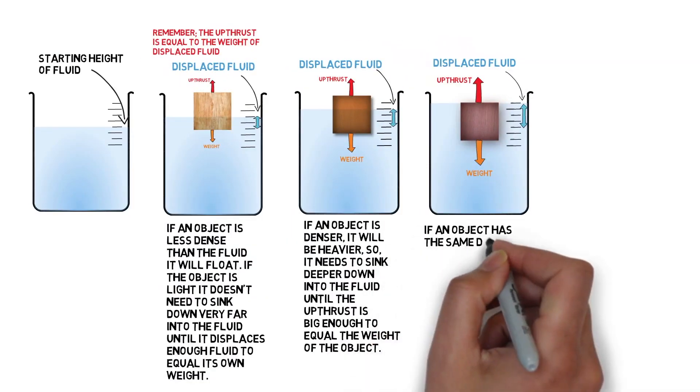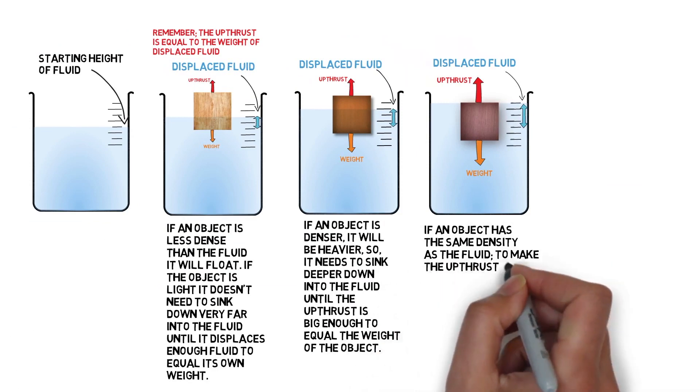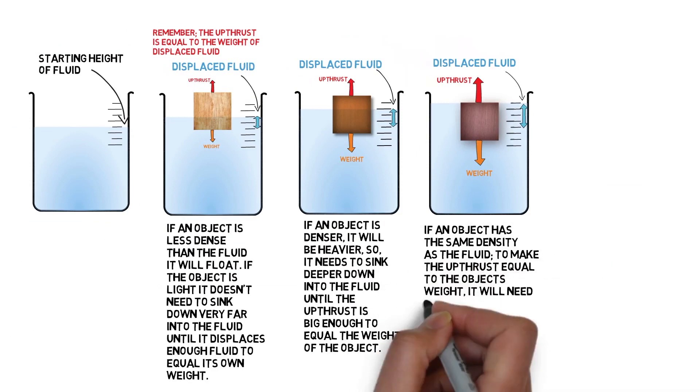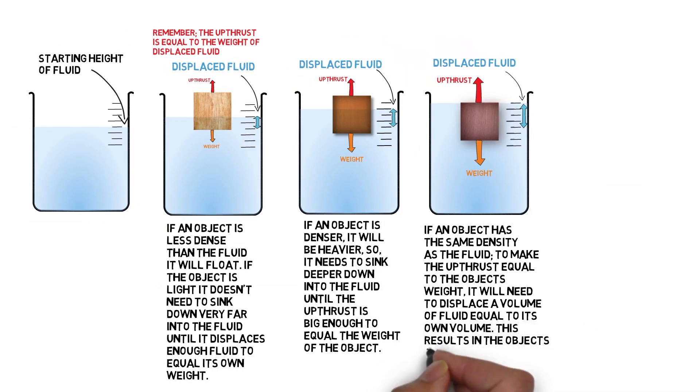If an object has the same density as the fluid, to make the upthrust equal to the object's weight, it will need to displace a volume of liquid equal to its own volume. This results in the object's surface being at the same height as the fluid's surface.